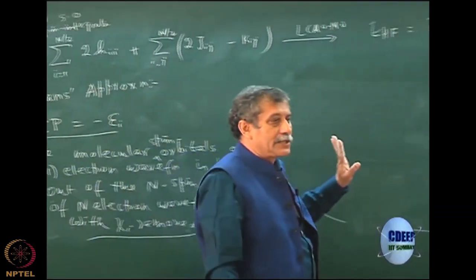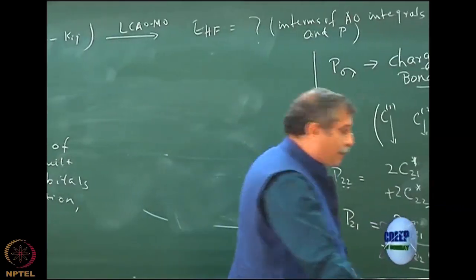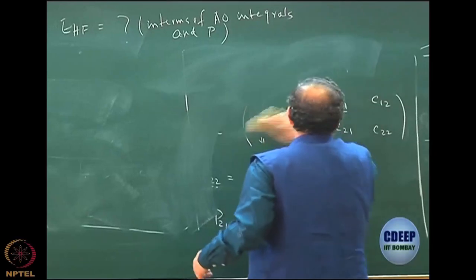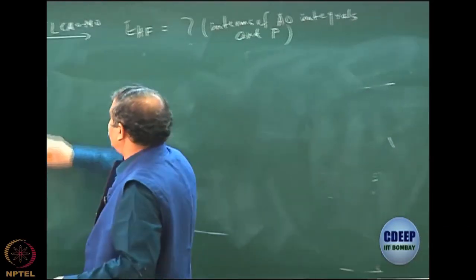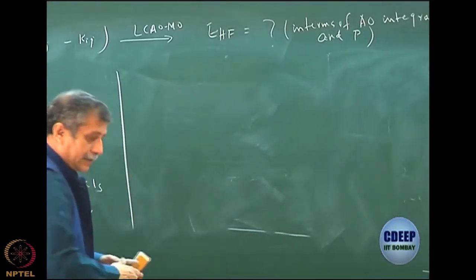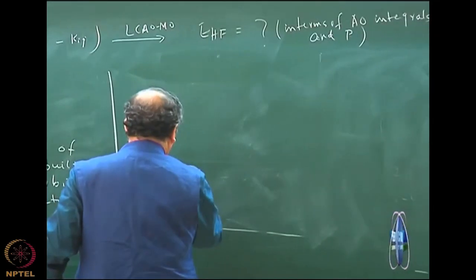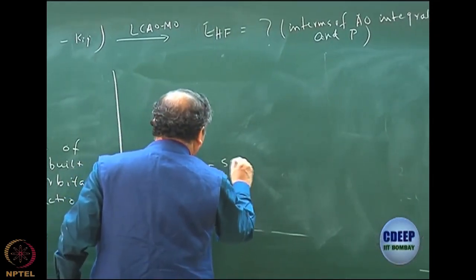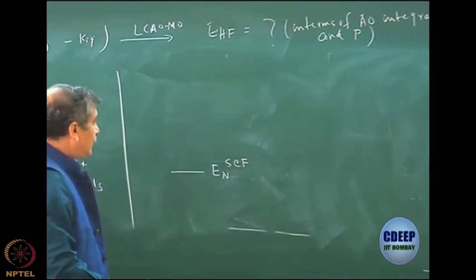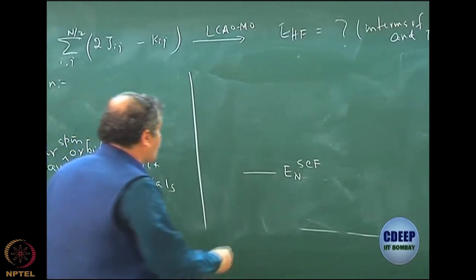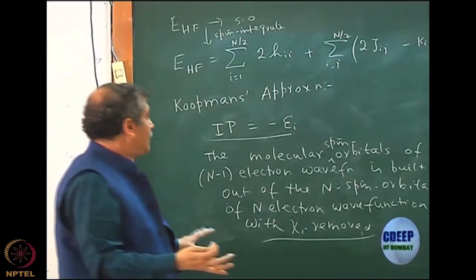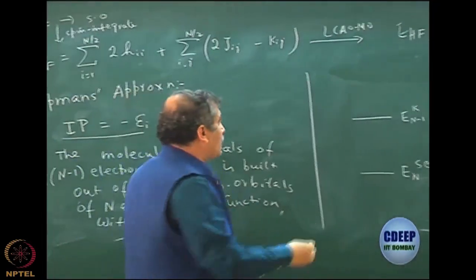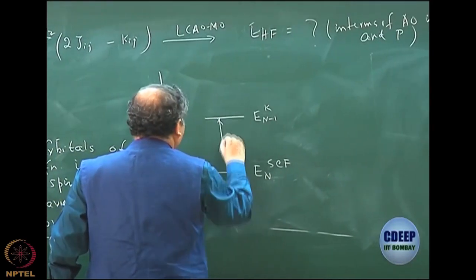So except for chi i, everything else is there, and the energy difference is only minus epsilon i. This works very well, particularly for ionization. I am trying to give a physical reason why it works well with a small diagram. Let us assume I have a Hartree-Fock n electron energy, which I call E_n SCF. Then I construct E n minus 1 electron energy under Koopmans' approximation. What Koopmans is saying essentially is that this difference is epsilon i.